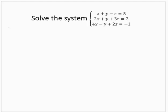Solve the system: x plus y minus z equals 5, 2x plus y plus 3z equals 2, 4x minus y plus 2z equals negative 1.